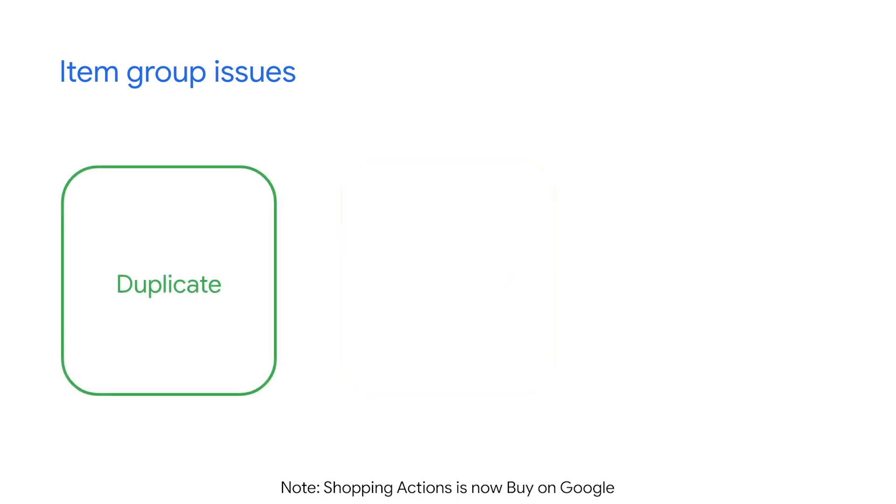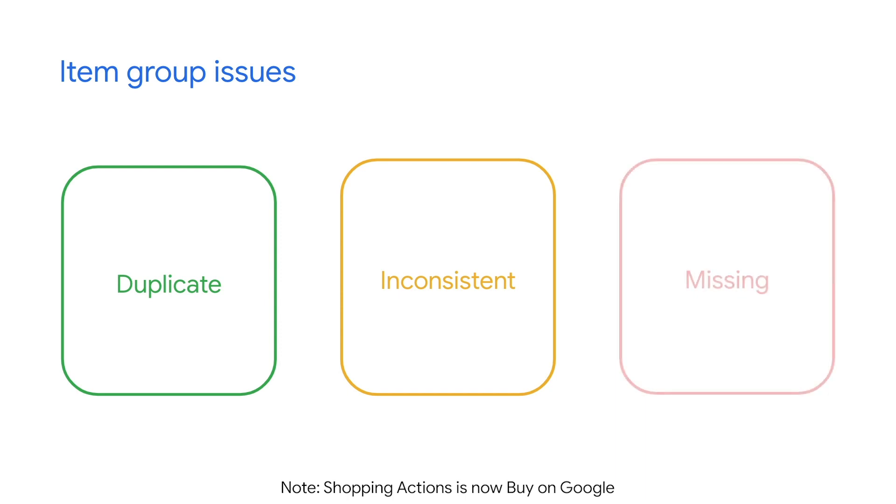Item group issues can be bucketed into three categories: item group duplicates, item group inconsistencies, and item group missing information.